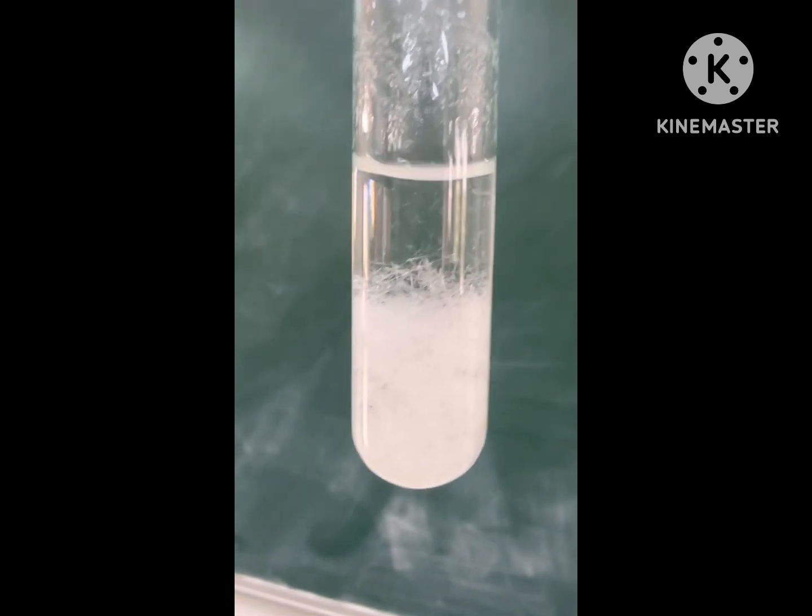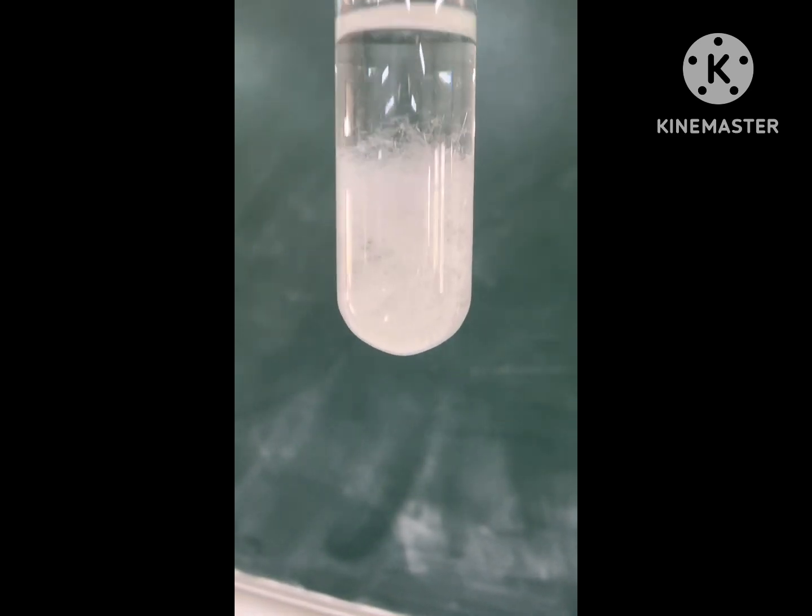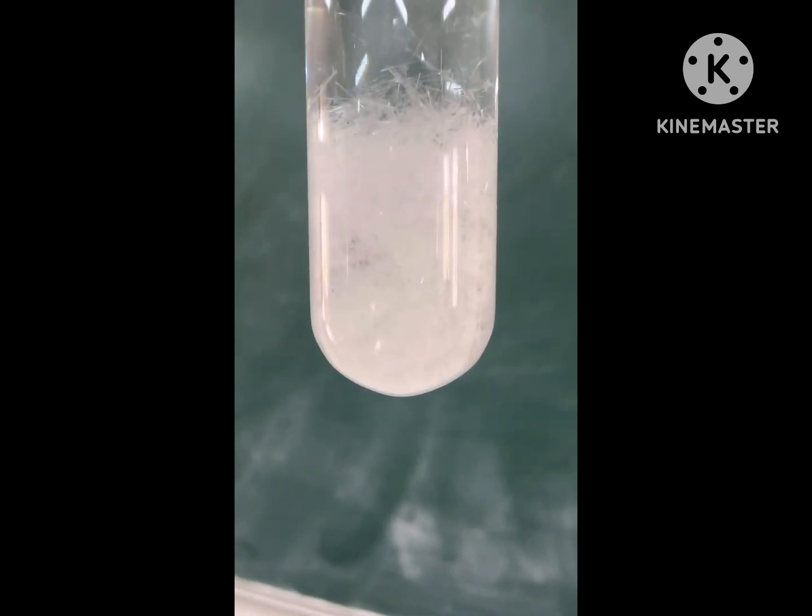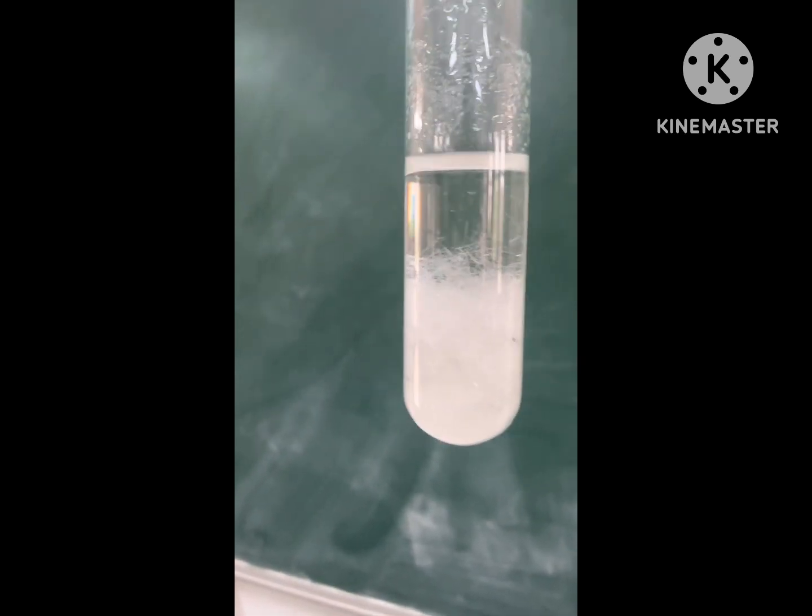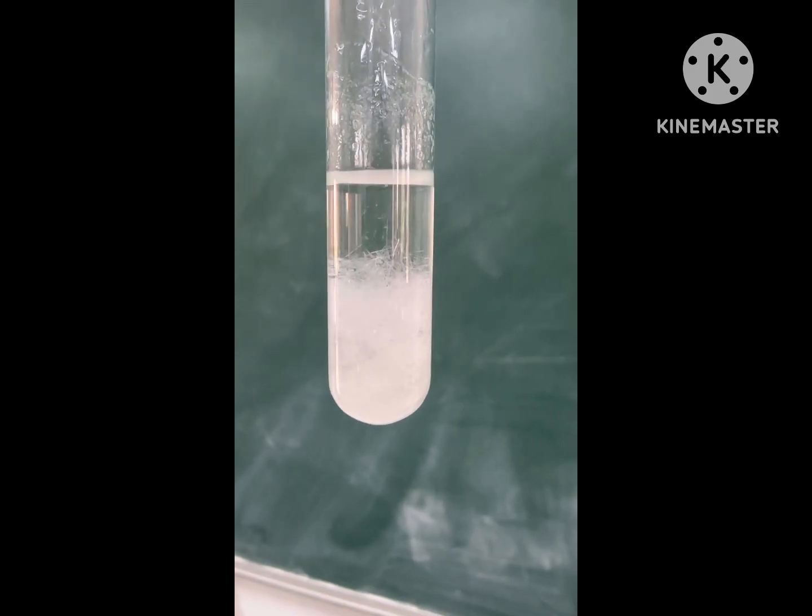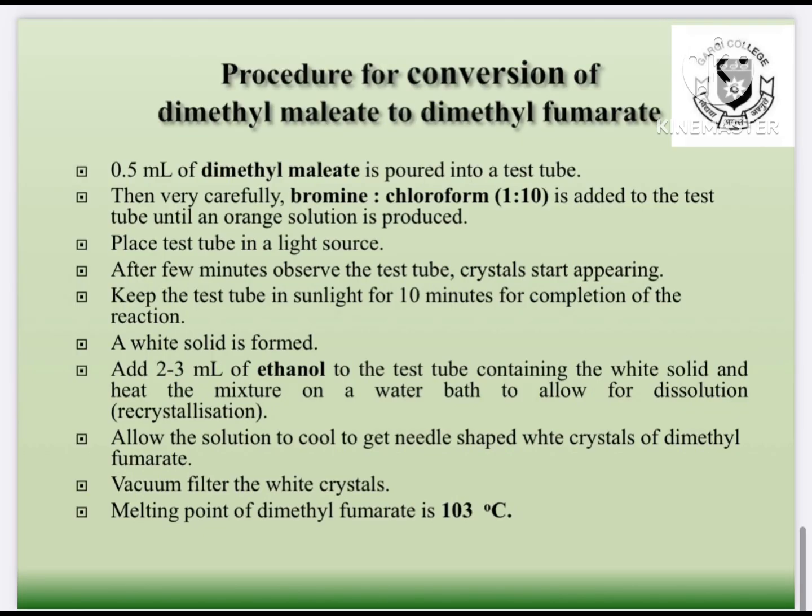Dimethyl maleate has a melting point of -19 to -17 degrees Celsius, whereas the trans isomer dimethyl fumarate has melting point of 103 degrees Celsius. So let's revisit the procedure.